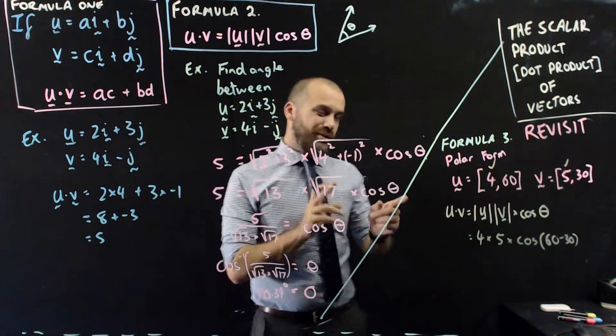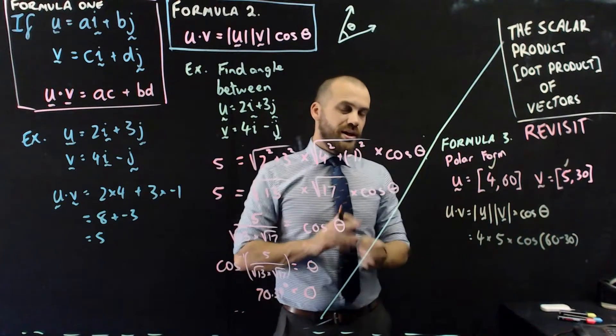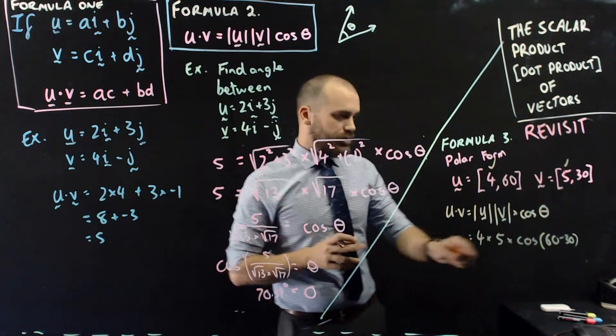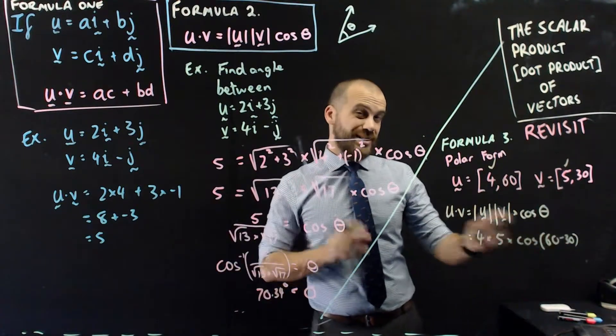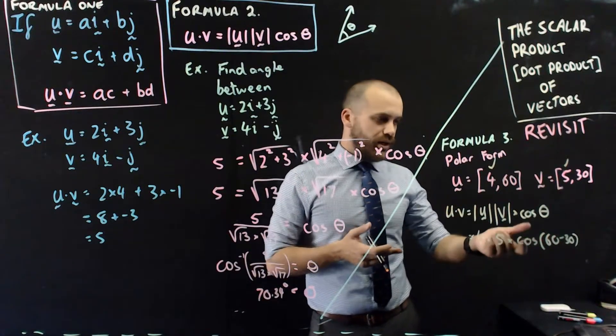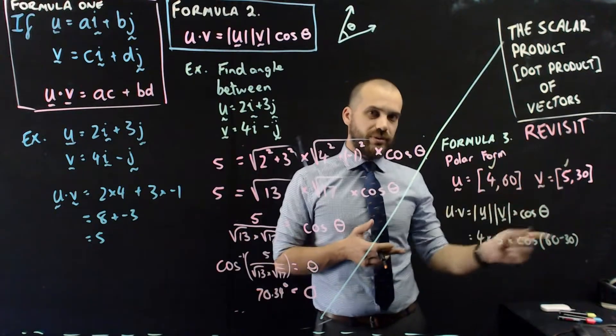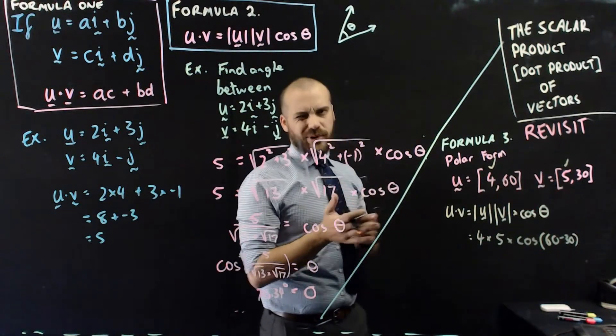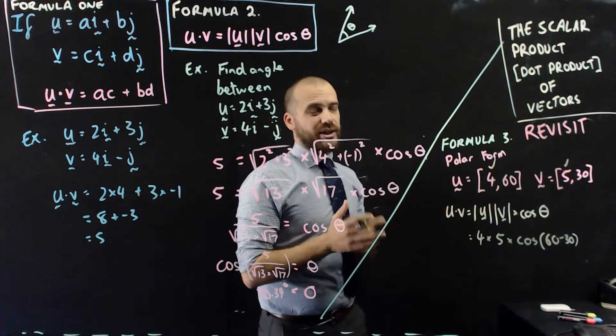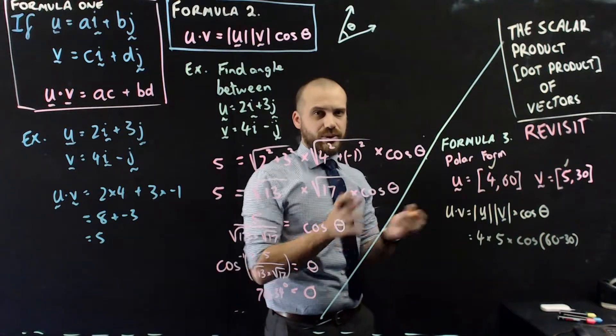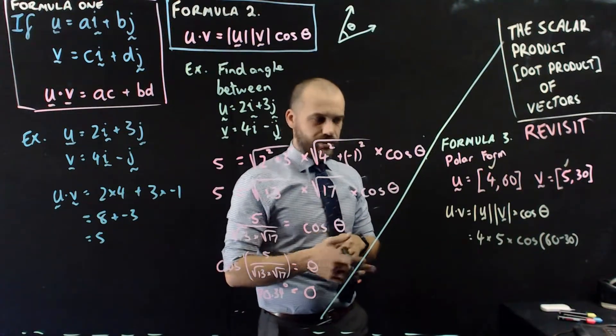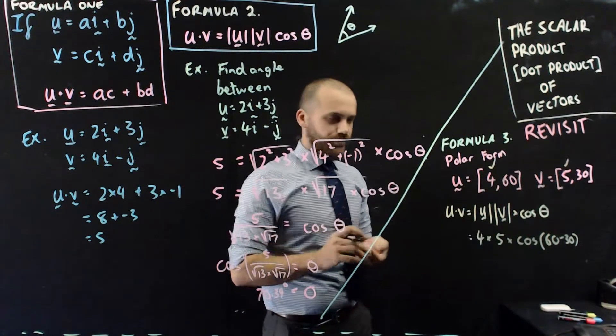Would it matter if I did this minus this? No, it wouldn't, because cos of 30 is equal to cos of negative 30. So, it doesn't matter what order you subtract one from the other. Try to aim for an answer between negative 180 and positive 180 for reasons I'm not going to get into right now.